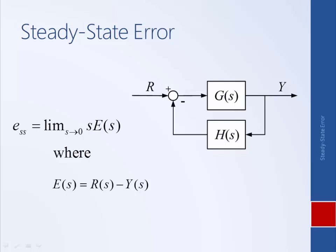So we have some reference R, which is our desired output, and we compare it to the actual output, and the difference between those two is the error. In some previous examples, it's turned out that this signal was equal to the error. That's not true in general.